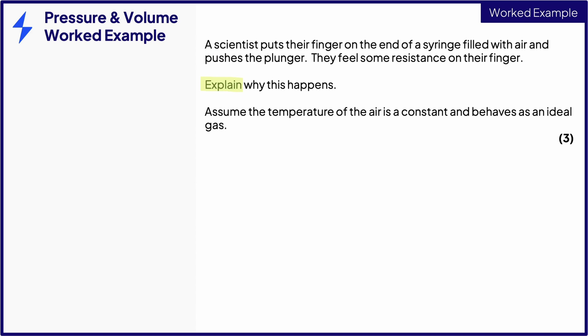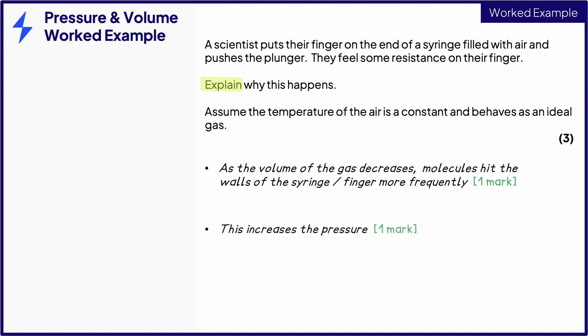The act of pushing the plunger is decreasing the volume of the gas. This means the molecules, which travel at the same speed, start hitting the walls of the syringe, and also the finger, more frequently. This is the first mark. This causes an increase in pressure, as pressure is proportional to the rate of these collisions. This is the second mark.